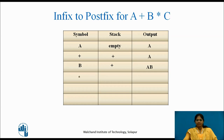The next symbol is the multiplication operator '*'. As it is an operator, we need to push it onto the stack. But first, we check the precedence of the top of the stack. The top is '+', and the precedence of '*' is higher than '+', so we can push it. The stack now has two elements: '+' and '*', with '*' at the top. The output remains 'a, b'. The next symbol is 'c' — as it is an operand, it is sent to the output, so the output is 'a, b, c'. The stack remains '+' and '*'.